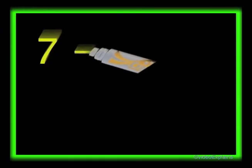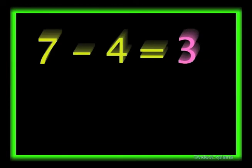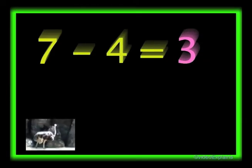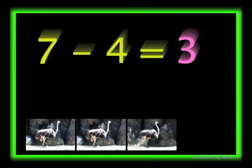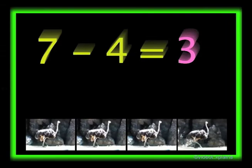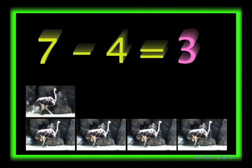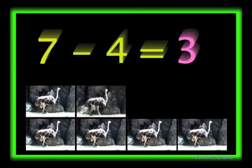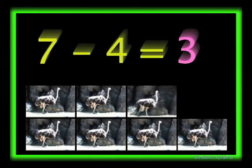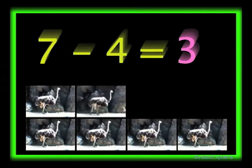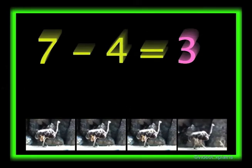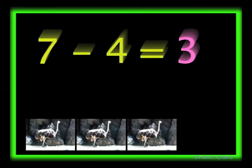Seven minus four equals three. There are seven ostriches: one, two, three, four, five, six, and seven. Out of seven ostriches, if four ostriches walk away, then three ostriches will be left. One, two, three, and four. So seven minus four equals three.